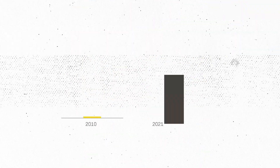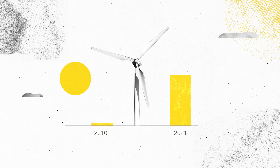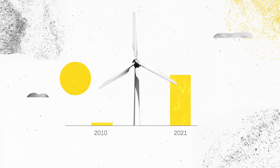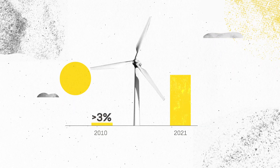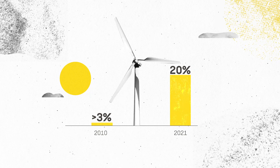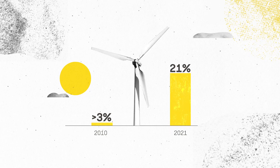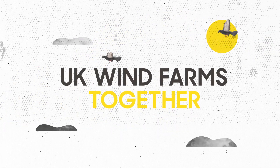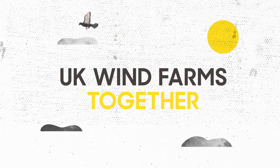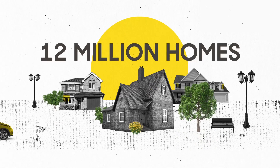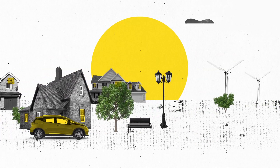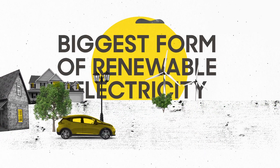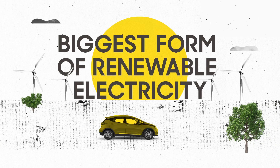Since 2010, the percentage of UK electricity generated from the wind has jumped from under 3% to around 20% and rising. UK wind farms together power almost 12 million homes, making it the country's biggest form of renewable electricity.